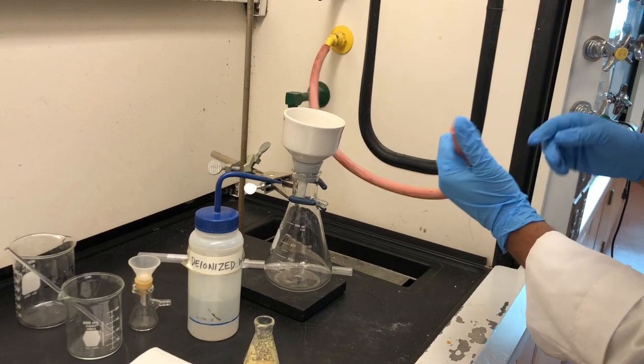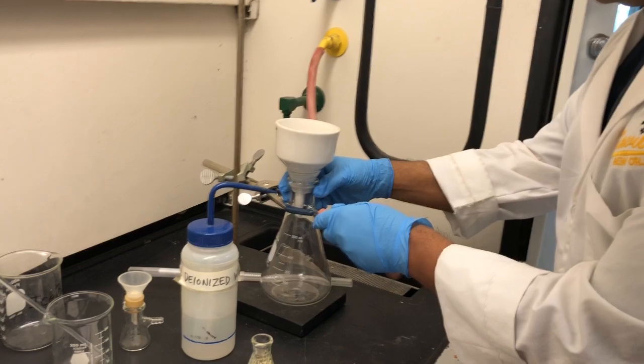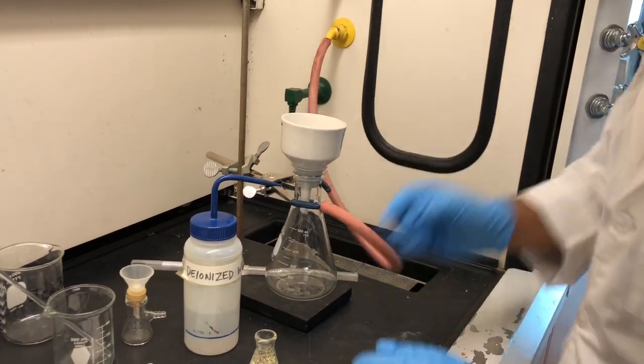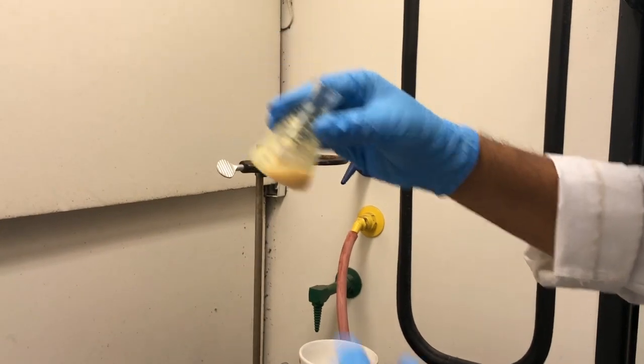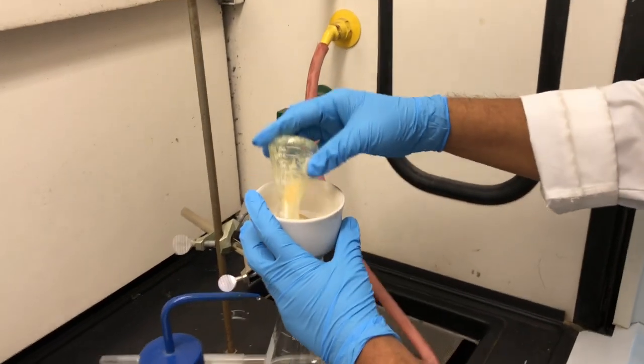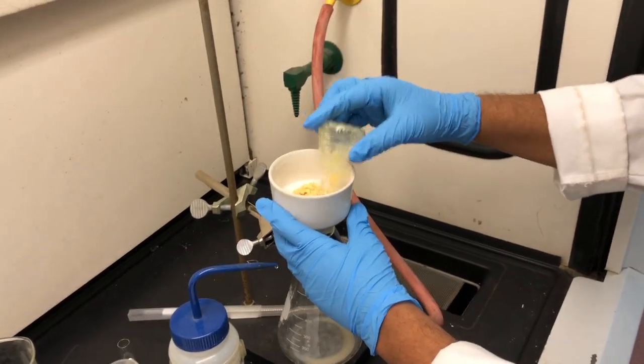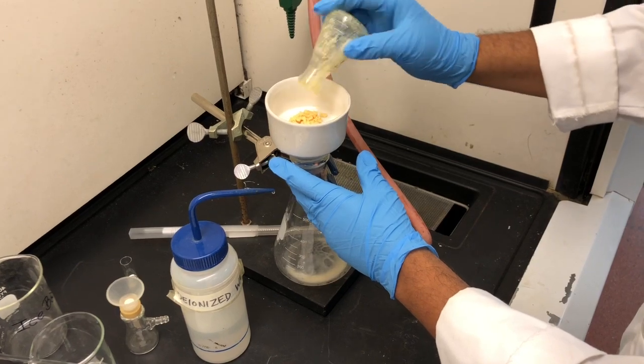And then you clamp it and you apply vacuum. Basically, you need to connect vacuum line to the filter flask. Then you swirl your alumina flask and you transfer all the solid on the filter paper. Now transfer. Try to take out the maximum amount of solid from the flask.